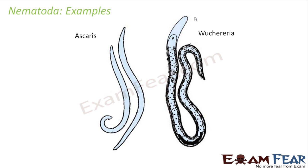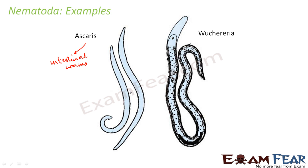Now let us look at some examples of nematodes. Ascaris and Wuchereria are some of the common examples. Ascaris is nothing but small intestinal roundworms, often found in the intestines. If you look at them, the body is not segmented — not divided into segments or parts — and they have a thread-like, cylindrical structure. So this was all about the nematodes.